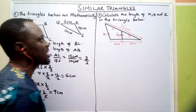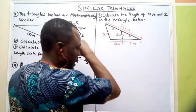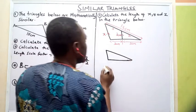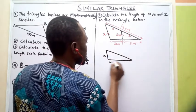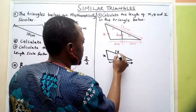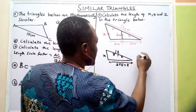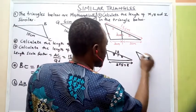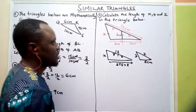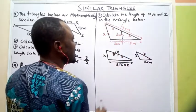Now let's look at the second question: calculate the length of X, Y, and Z in the triangle below. If I separate this shape and take the bigger shape, I can see that one side is 3 plus 5, which is 8, and another side is 12. For the smaller triangle, one side is 5 cm and another side is Z, with 3 on the remaining part. This larger triangle is an enlargement of the smaller one, so they are mathematically similar.